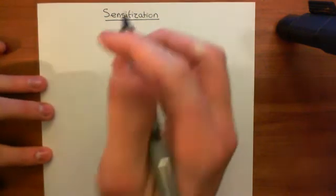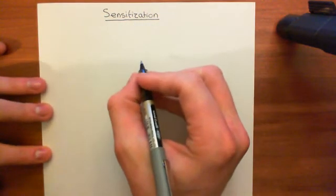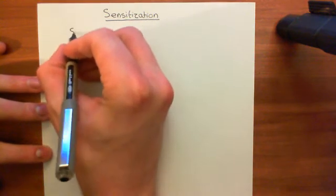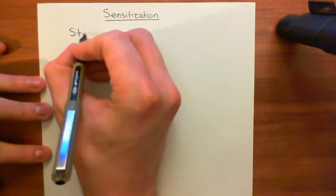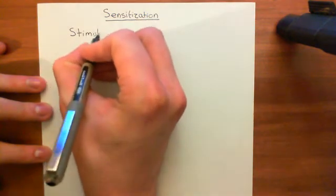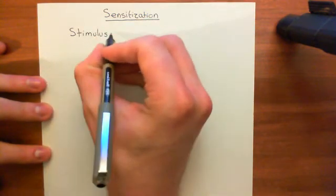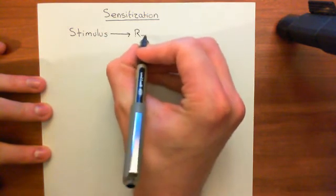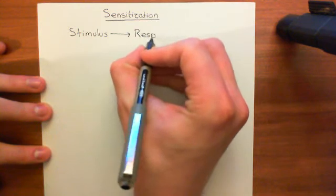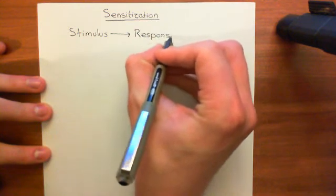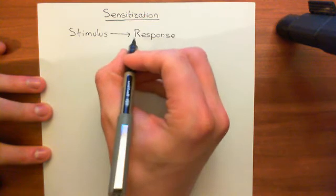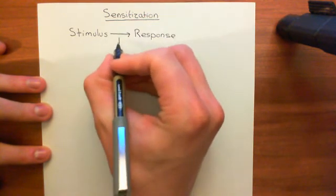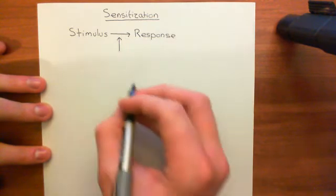So let's start with what sensitization is. Basically, you start with some sort of response to a stimulus — a sensory stimulus of some sort — and then it triggers a response. Sensitization is when you increase the size of the response that you initiate to a stimulus because of some other stimulus.